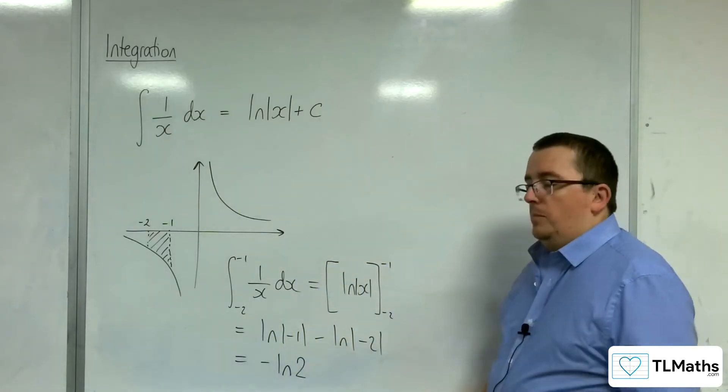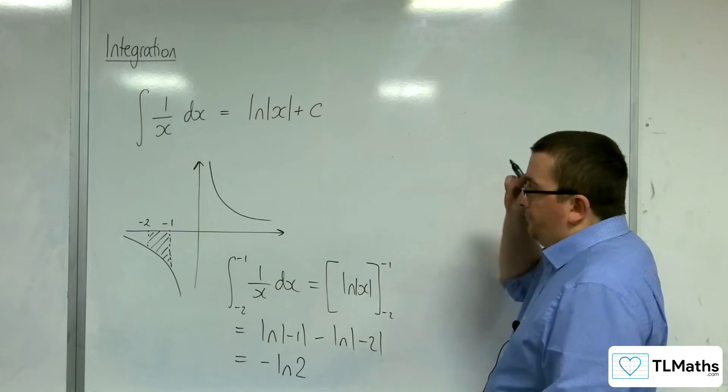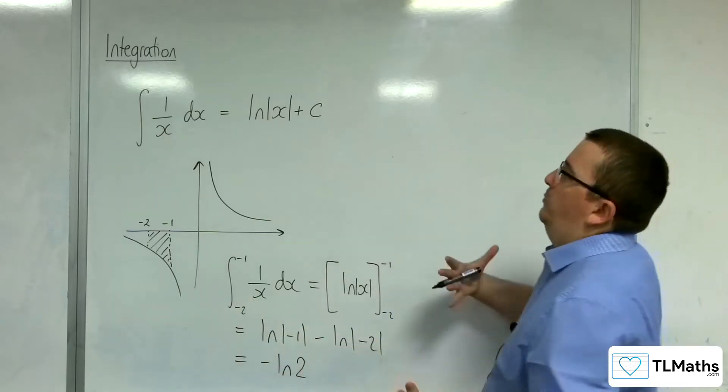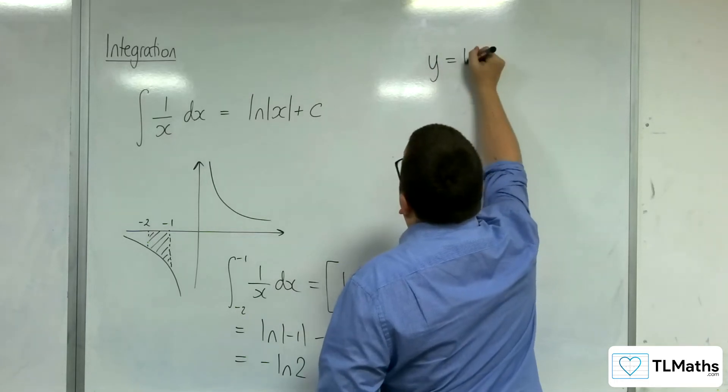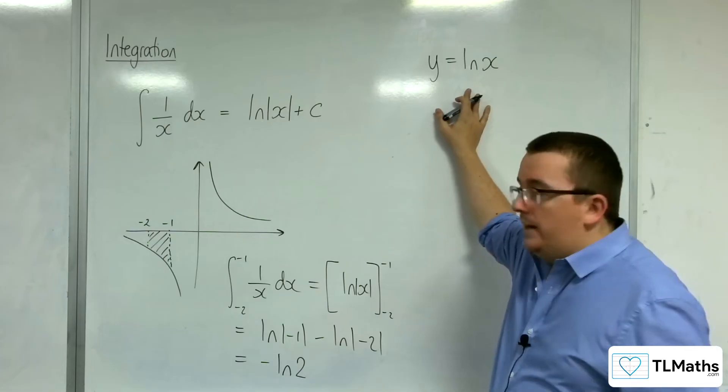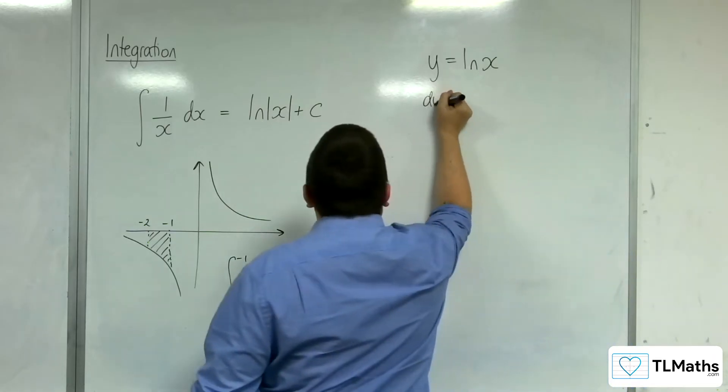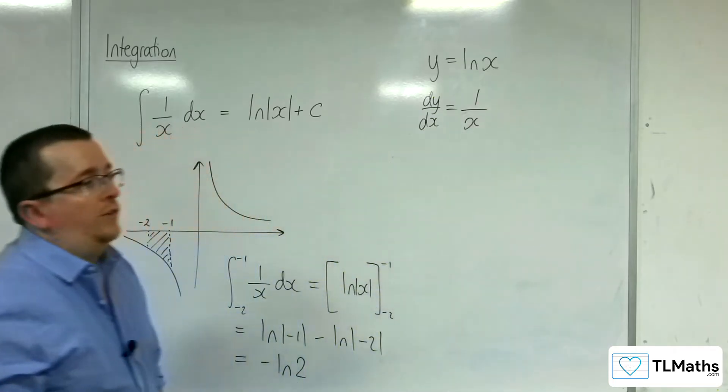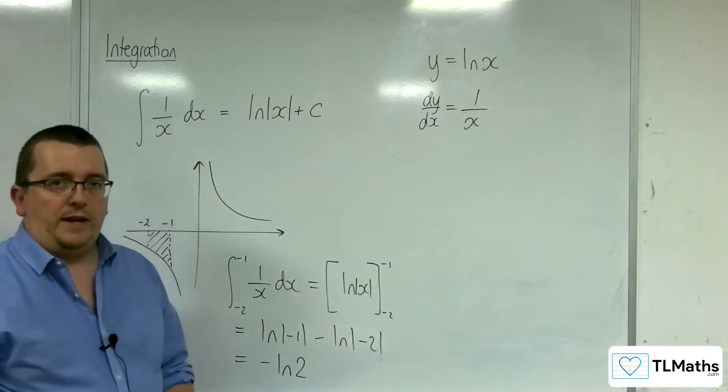But they do seem to pop out of thin air. So what we want to do is go back to when we were looking at differentiation. And if we wanted to differentiate y equals the natural log of x, we would say dy by dx is 1 over x. I don't think anyone is going to really dispute that at this stage.